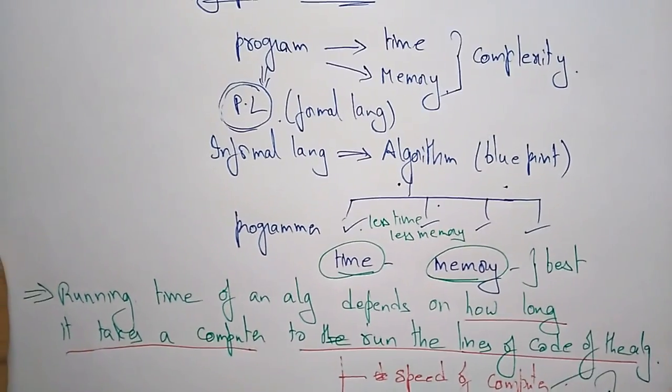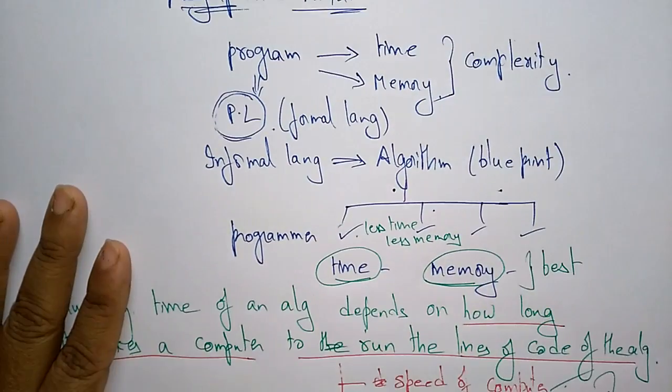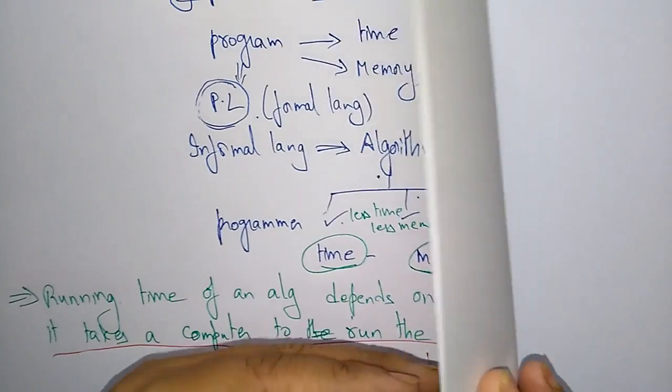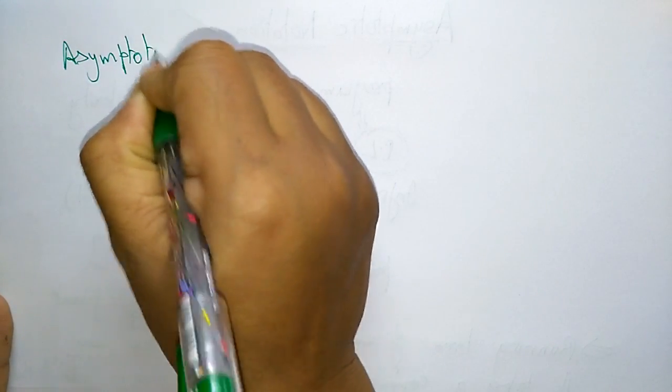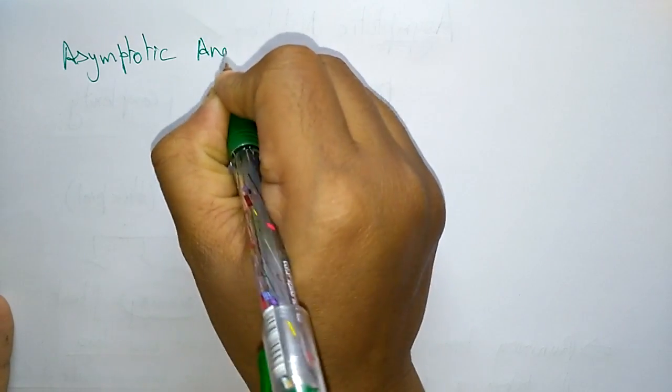To overcome this problem, we use asymptotic notations. The main idea of asymptotic analysis is to have a measure of efficiency of an algorithm that does not depend on machine constants, does not require algorithms to be implemented, and does not require the time taken by programs to be compared.